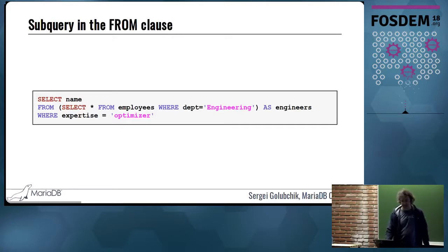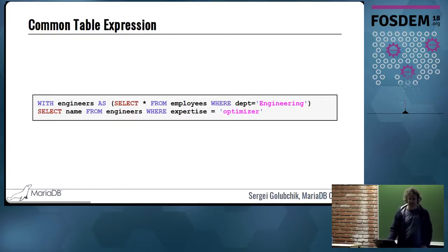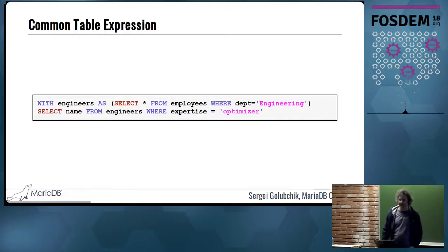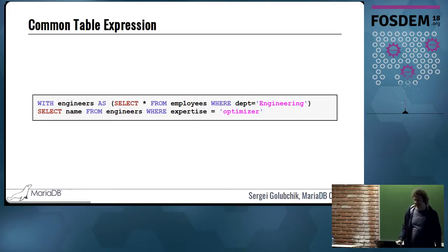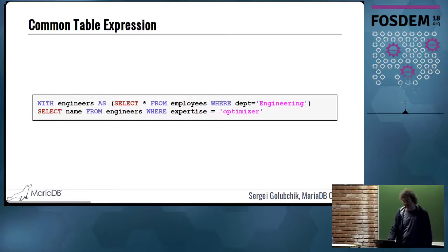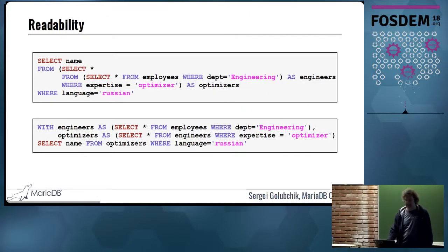This is a subquery in the from clause. You can see there's a subquery put in the from clause of the other query. It returns some results, and the outer query selects from the result of the subquery. This existed in MySQL for quite a while. A common table expression can say pretty much the same thing, but in a slightly different syntax where first you specify the subquery, give it a name, and then you select from it.